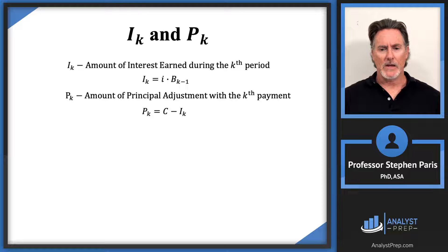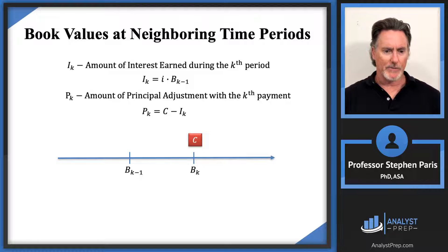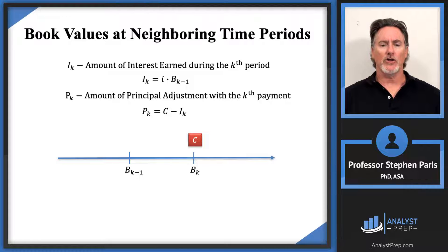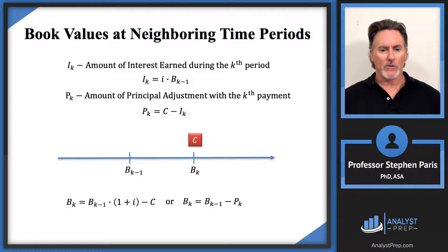Next we look at book values at neighboring time periods. The difference between book values at two neighboring time periods is accounted for through the coupon payment cap C. There are two ways to relate B_{k-1} with B_k: you can take B_{k-1}, accumulate it with interest by multiplying by (1+i), then subtract the coupon payment; or take B_{k-1} and subtract the principal adjustment portion of the coupon. These are the exact same symbolically as the loan balance formulas.